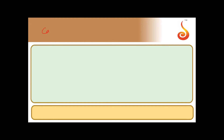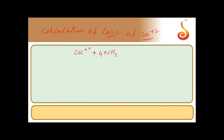The second step is the calculation of the concentration of the copper ion — this is the most important step. For this, we write the equation: Cu²⁺ forms a complex with 4 molecules of ammonia, giving rise to the copper-ammonia complex, whose formula is given in the question.